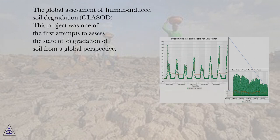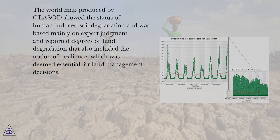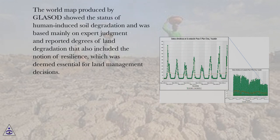The Global Assessment of Human-Induced Soil Degradation — GLASOD — was one of the first attempts to assess the state of degradation of soil from a global perspective. The world map produced by GLASOD showed the status of human-induced soil degradation and was based mainly on expert judgment. It reported degrees of land degradation that also included the notion of resilience, which was deemed essential for land management decisions.